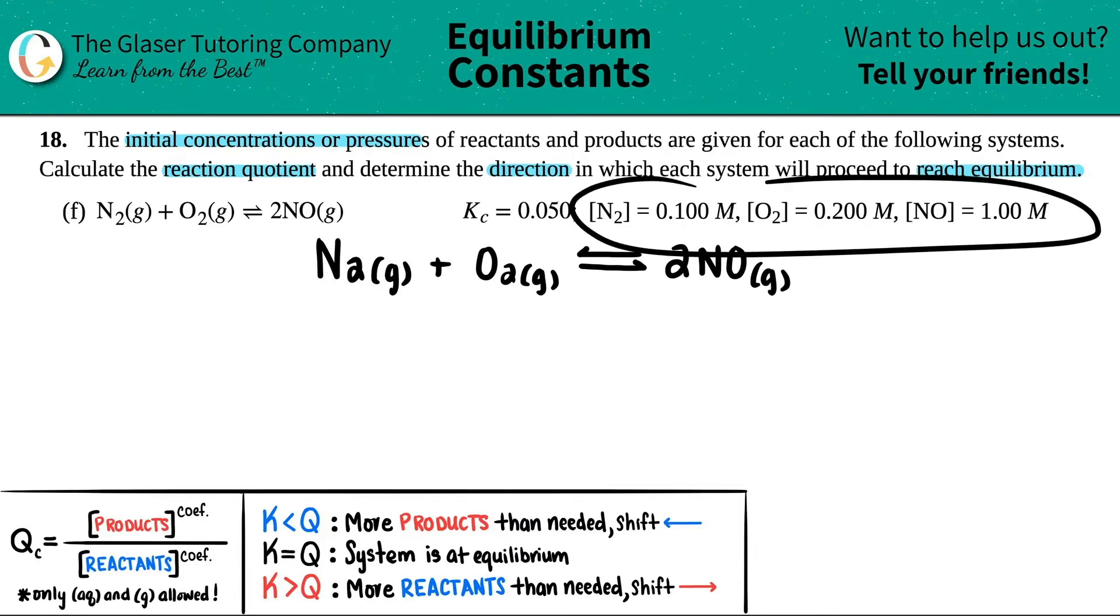The next thing is that they told me starting molarity values. Remember, concentrations is the same thing as molarities. The C in KC stands for concentration. So I'm just going to write down the molarity values that they gave me. So they told me that I have 0.100 molarity for N2. The O2, I have 0.200 molarity. And then for my product, I have 1.00 molarity here.